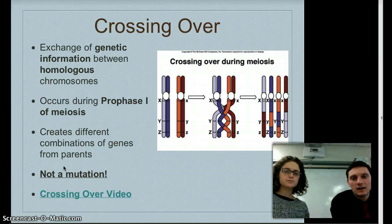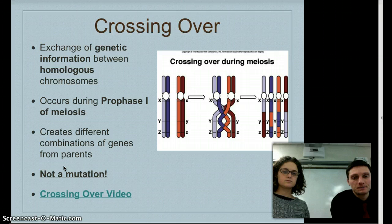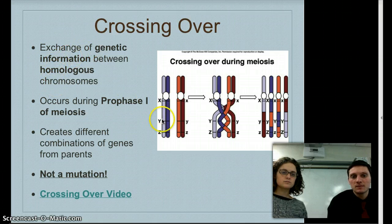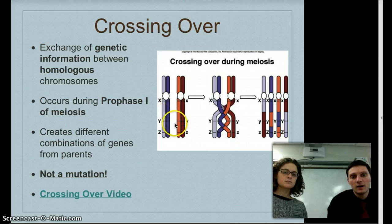The first way that genetic diversity can be increased is something called crossing over. Crossing over is an exchange of genetic information between homologous chromosomes. Here we have homologous chromosomes — the bluish color is from the father, and the reddish color is from the mother.